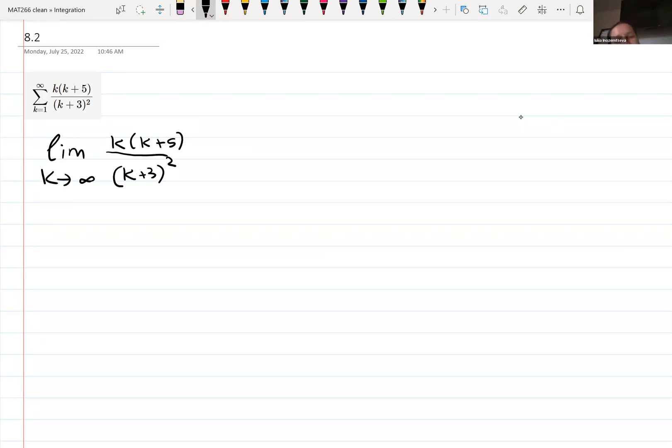For now, we just learned a divergence test. And here's the difference between sequences and series. While sequence is a list, so it has some A1, A2, A3, and so on, series is a sum. So it's A1 plus A2 plus A3 and so on. So they behave differently.